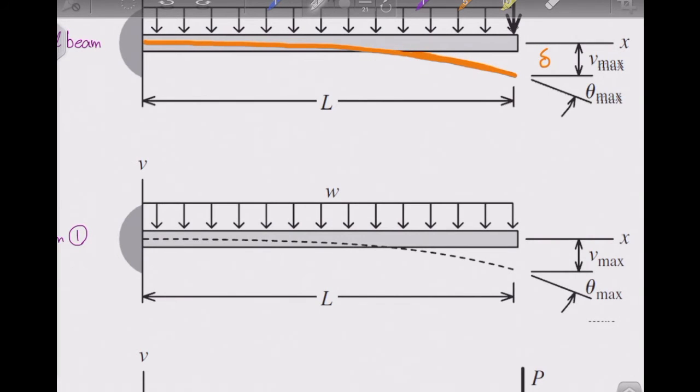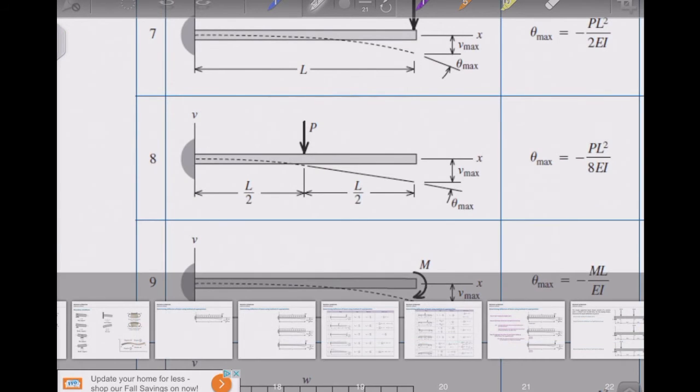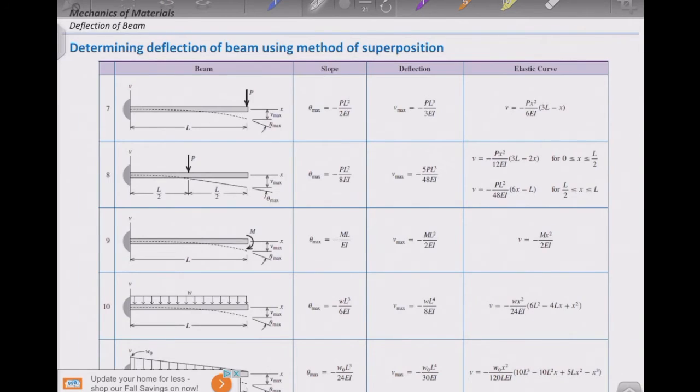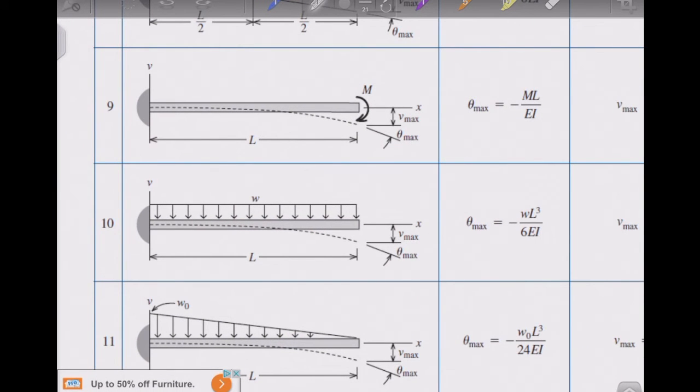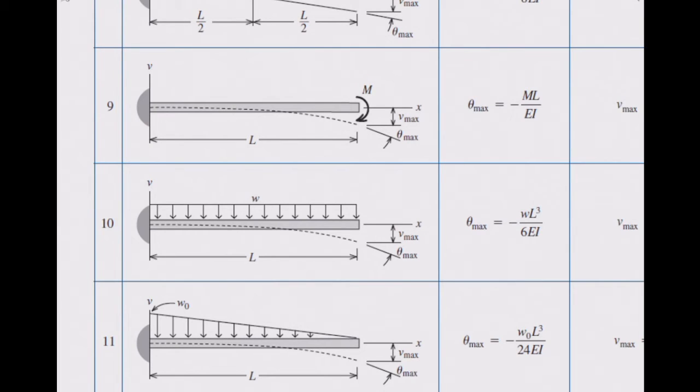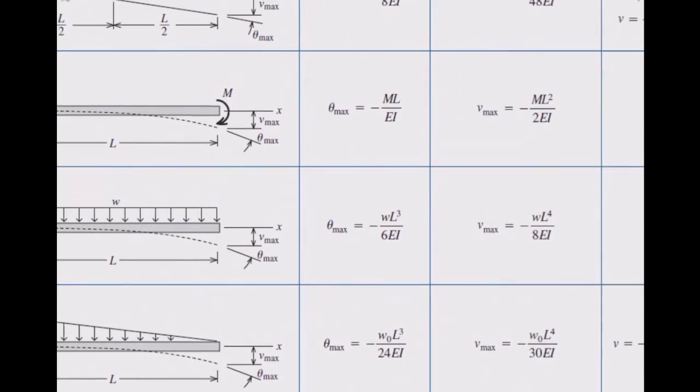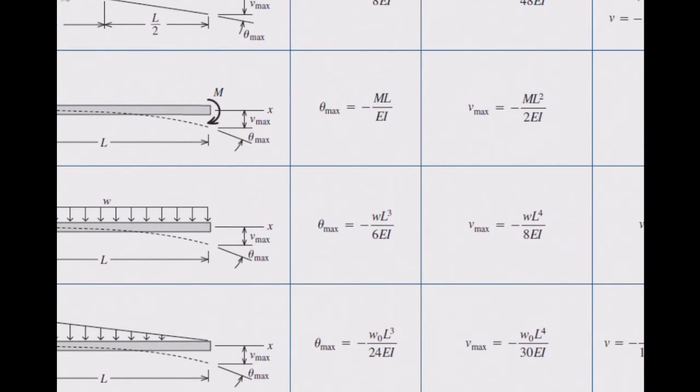How much is the deflection of this beam at the right end? To determine that, I simply go to the table and pick up the value for that. So here, this is the appropriate structure, and I need to determine the maximum deflection at the right end, and this is the value.